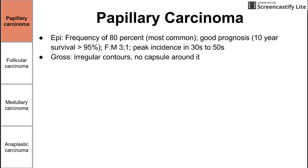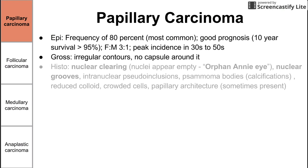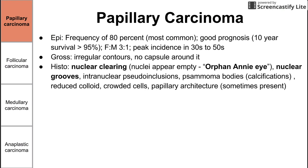Grossly, papillary carcinoma shows irregular contours and there's no capsule around it. That differentiates it from follicular carcinoma, which has a well-defined capsule structure. On histology, we see nuclear clearing, which is pretty characteristic — the nuclei appear empty and it's called an orphan Annie eye. You also see nuclear grooves, where nuclear material aggregates and makes what looks like a darker staining line.